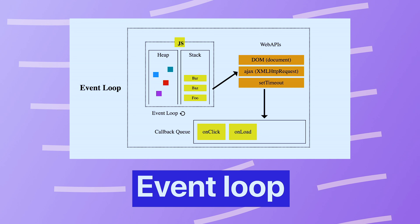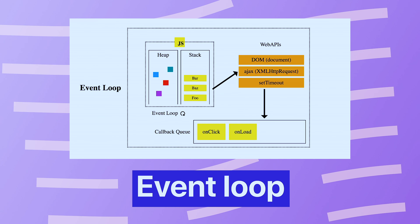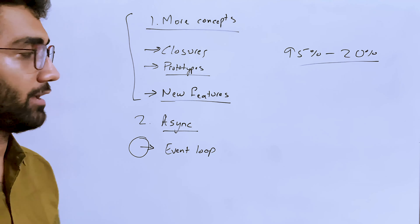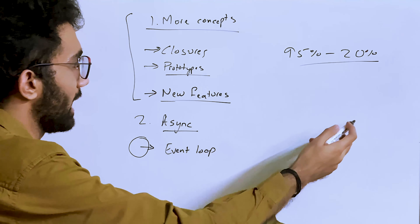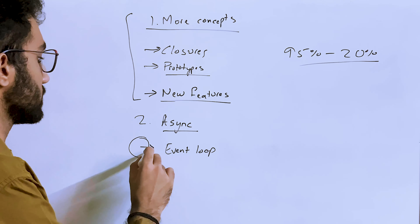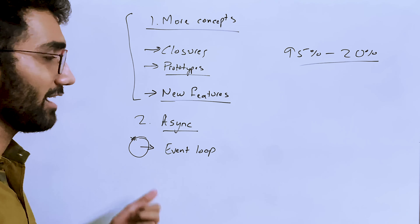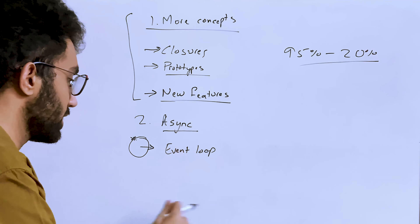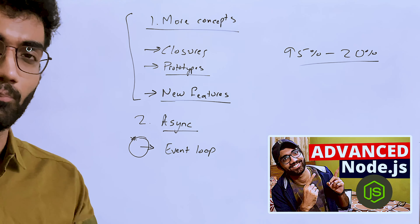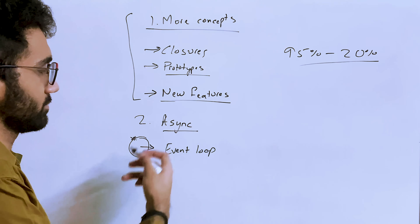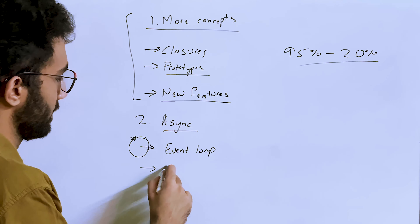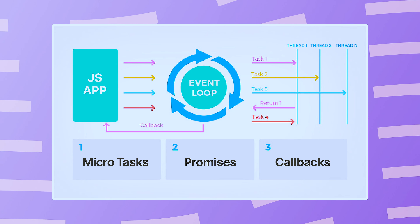The second thing you should know is how the asynchronous model in JavaScript works. The first concept there is the event loop — how does JavaScript really work? It's not a simple language executed line by line; it uses something a bit complex known as the event loop. I've done multiple videos on this; I'll link a relevant one here from an advanced Node.js course that covers event loop in great detail.